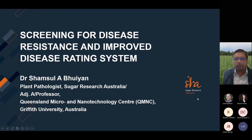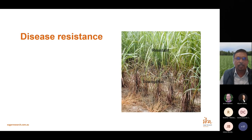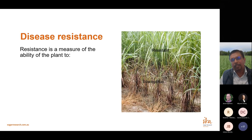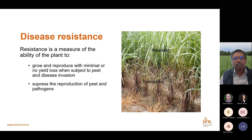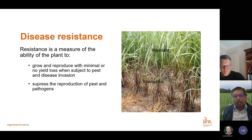What is disease resistance? Disease resistance is the measure of the ability of a plant to grow and produce without suffering yield loss — it can sustain infection of the pathogen. Another way to say it: it is the ability of the plant to suppress the growth and reproduction of the pest and pathogen, so even if invasion occurs, the pathogen's reproduction is suppressed and no significant yield loss results.